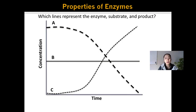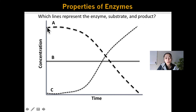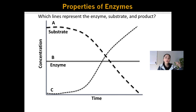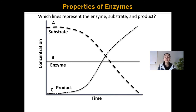Let's test your knowledge. Here we're showing three lines representing the change in concentration of three different substances over time. Which of these lines represents the enzyme, the substrate, and the product? Line A represents the substrate because it is decreasing over time — the substrate is being turned into something else. Line B represents the concentration of the enzyme, which doesn't change because it's not being altered in the chemical reaction. Line C represents the product because its concentration is increasing over time.